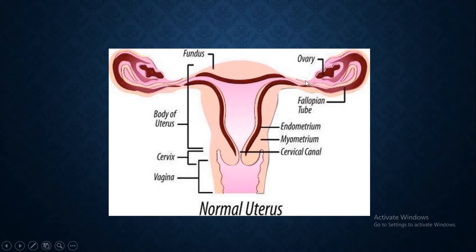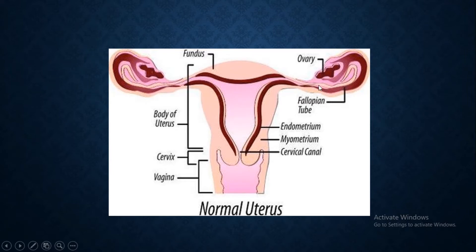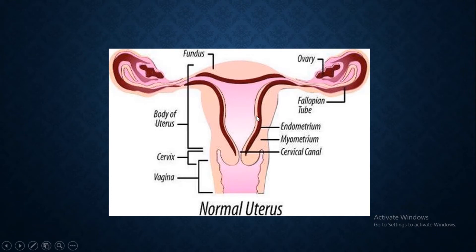As we said before, the fallopian tube is the site of fertilization — it is where the fertilization between the sperm and the egg takes place. When fertilization takes place after the egg cell is ovulated and released outside the ovary, the egg cell will be released into the fallopian tube. The zygote starts dividing by mitosis and then moving due to the beating of the cilia present in the fallopian tube, which helps the fertilized zygote move until it reaches the uterus, where it implants itself in the uterine lining.